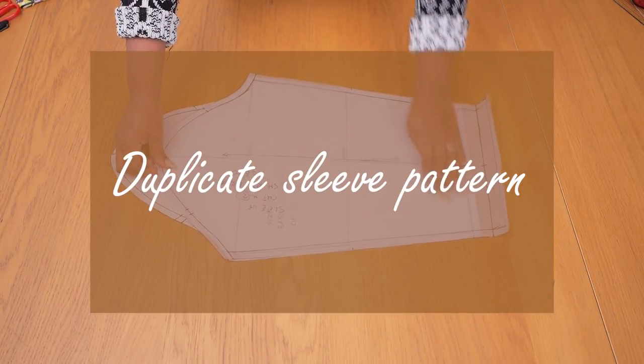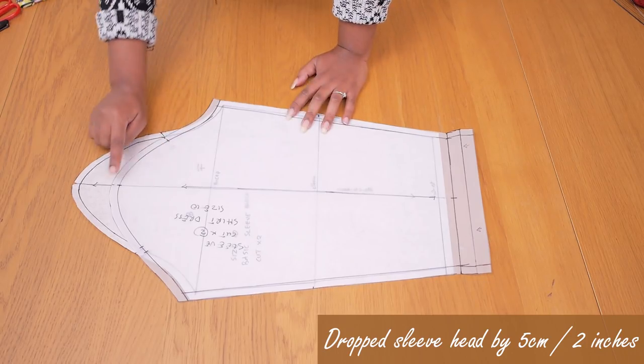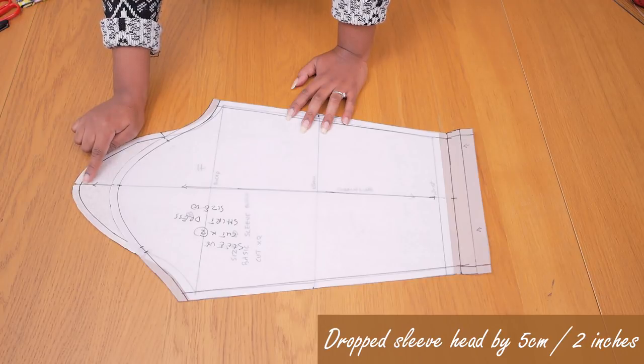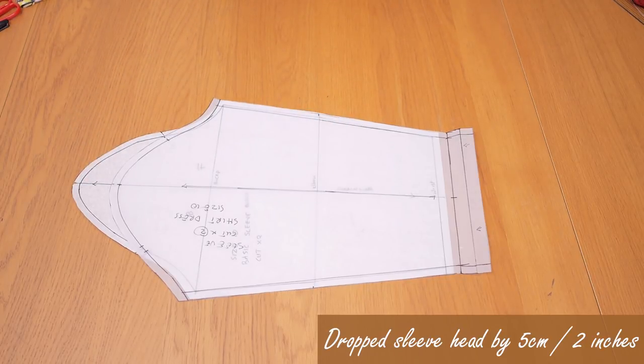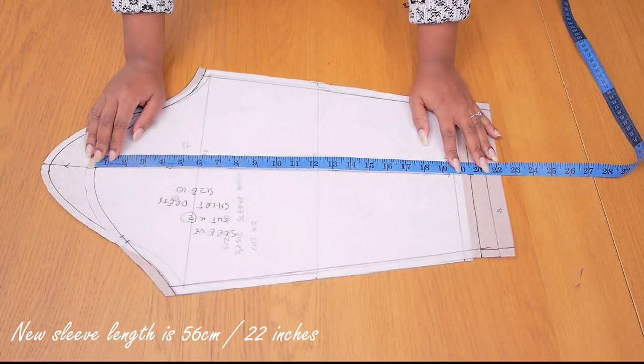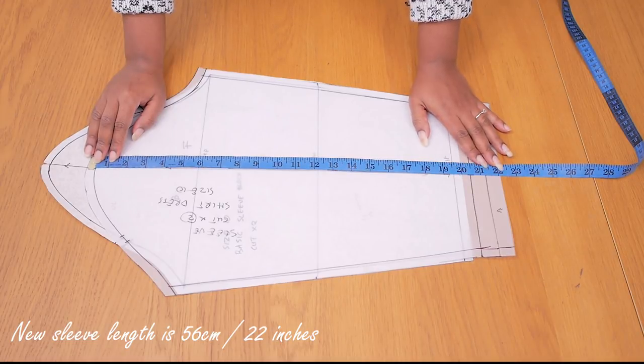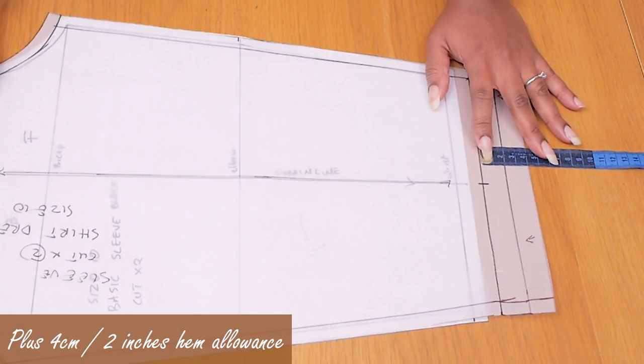So for the sleeves I didn't change much. The two main things I did was I dropped the sleeve head by about five centimeters or two inches to take away the extra ease that the sleeve has along the sleeve head and then I made it about 22 inches long adding an additional two inches for the hem.